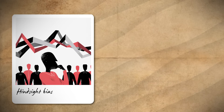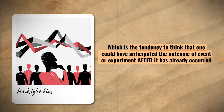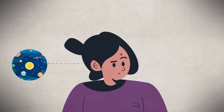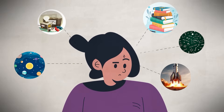Up next is hindsight bias, which is the tendency to think that one could have anticipated the outcome of an event or experiment after it already occurred. Essentially, hindsight bias is the tendency to think that information is less surprising once you already know it. This bias happens because once our brains learn something, we start making connections to all other information we know and begin to see patterns. Hindsight bias can distort memories, affect how individuals learn from past experiences, and may result in individuals overestimating their ability to predict future events.